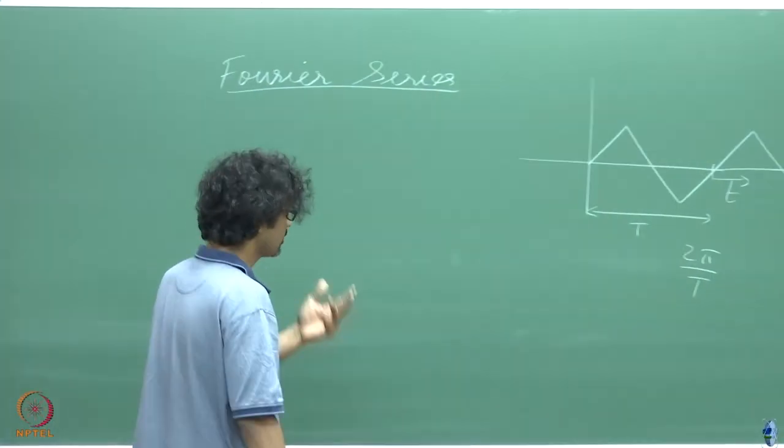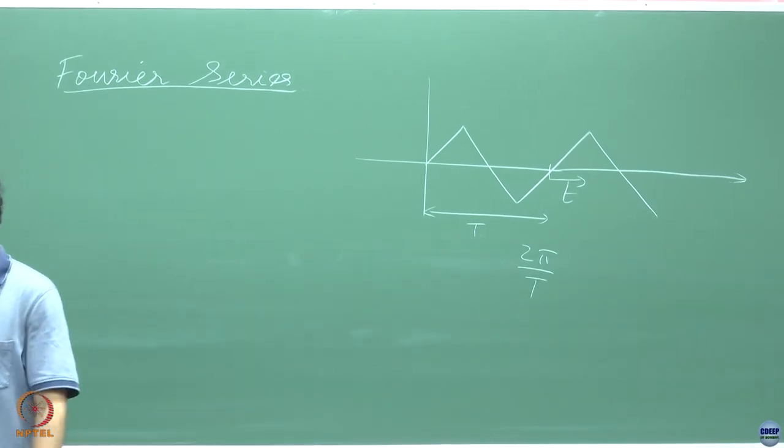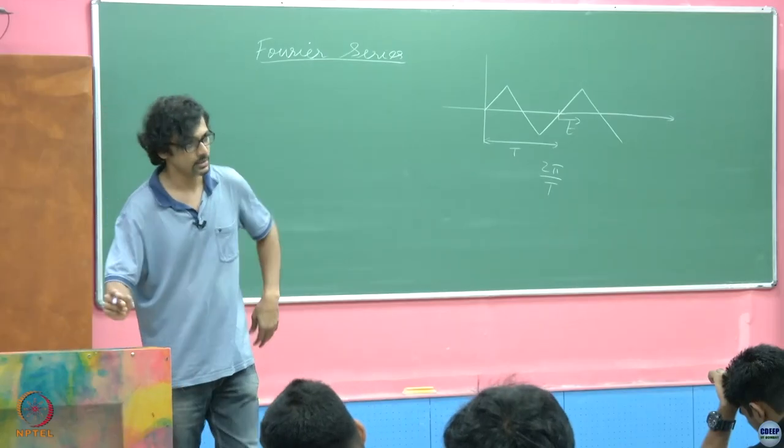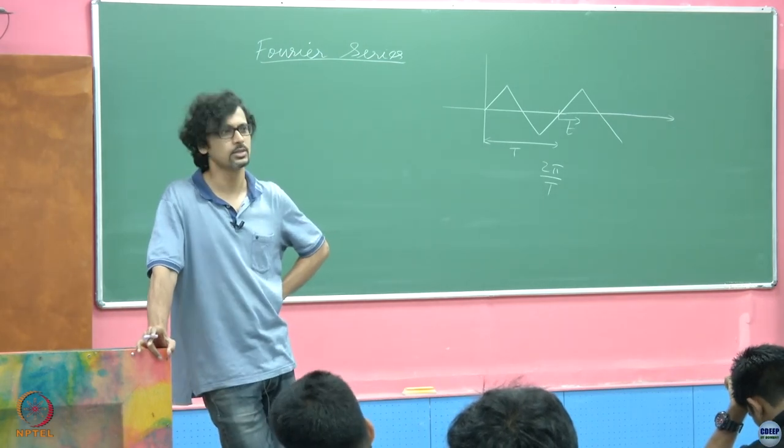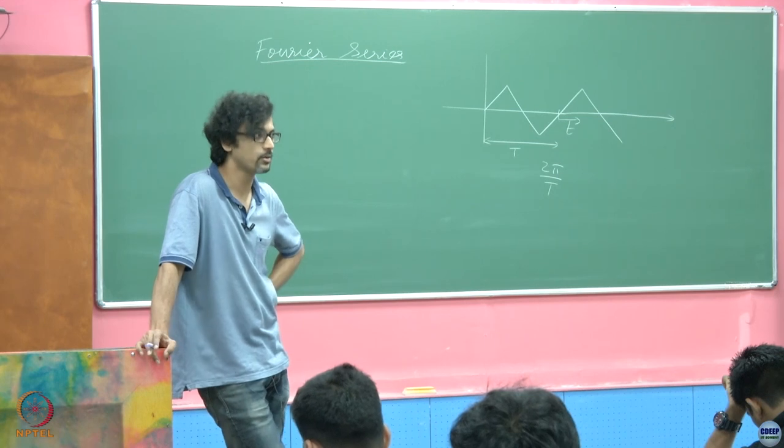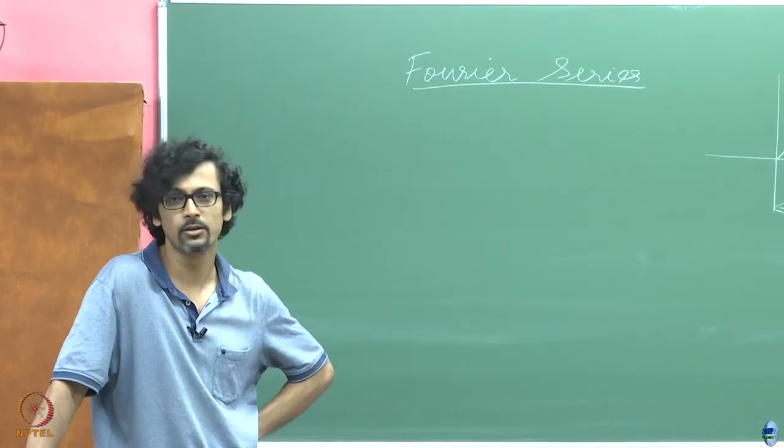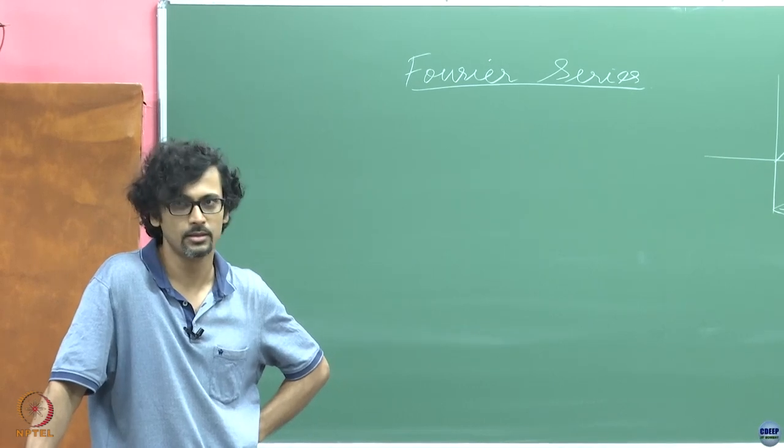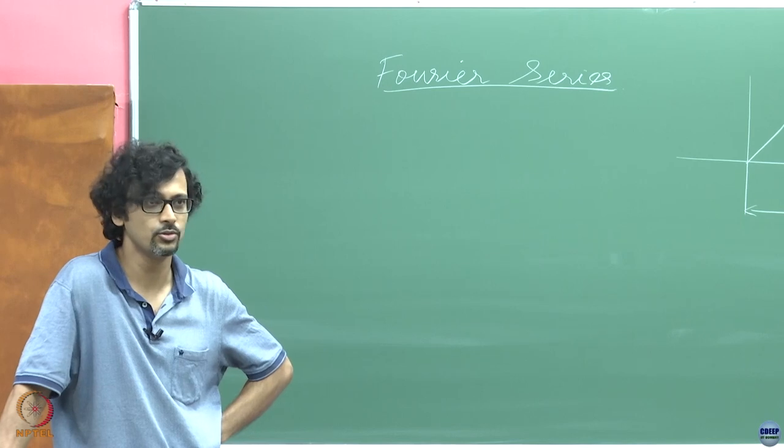Have you ever given it a thought as to what is being done? Because in theory, this Fourier series is an infinite series, is it not? You just figure out that there is a formula subject to Dirichlet's conditions and all that you have to check, and then you have to calculate the coefficients. There is a formula for that calculation. Some integrations and stuff that you have to do, right?